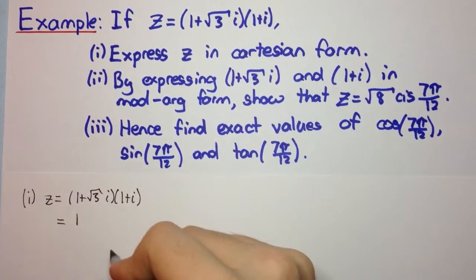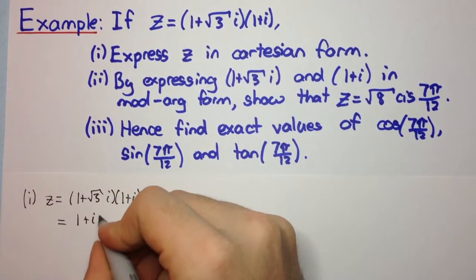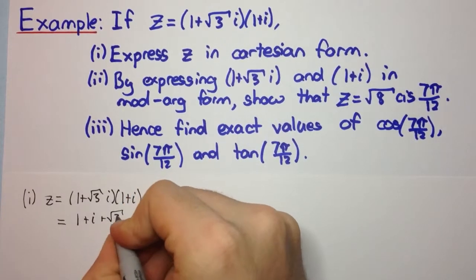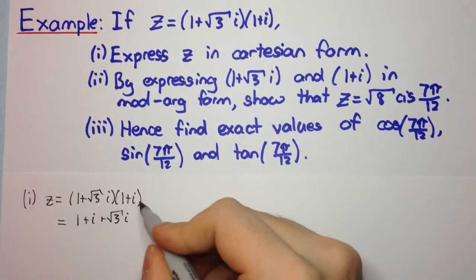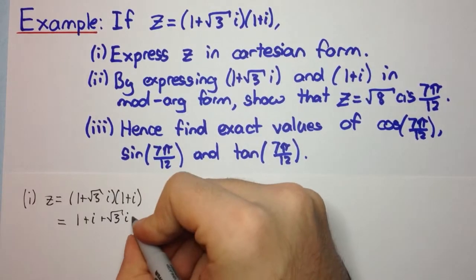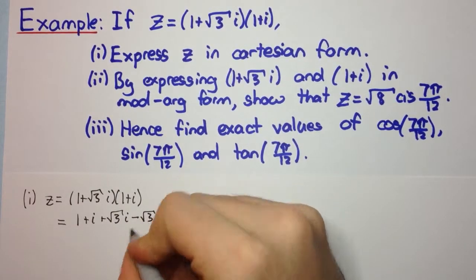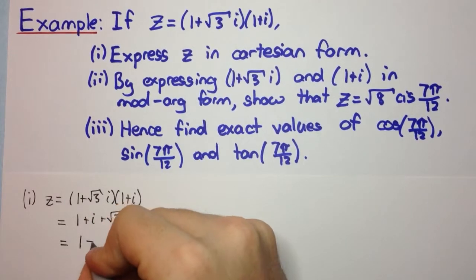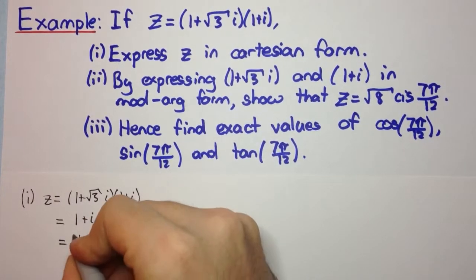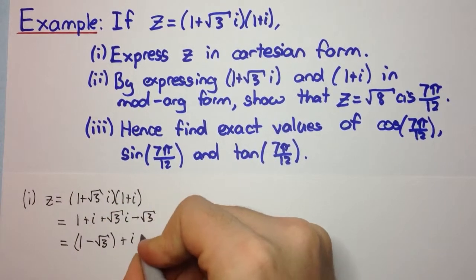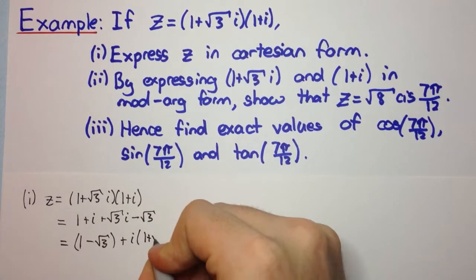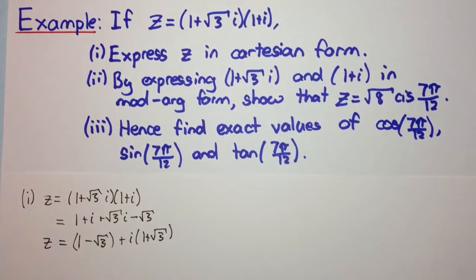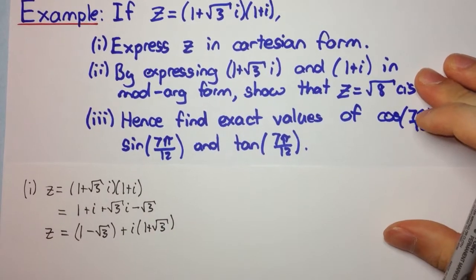So that'll be 1 times 1 is 1, 1 times i is i, √3i times 1 is √3i, and √3i times i is √3i squared, which is minus √3. We collect real and imaginary parts, factor out the i, and that's our Cartesian form for z.